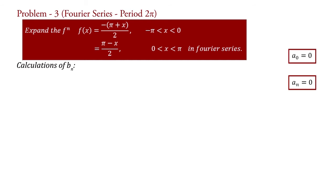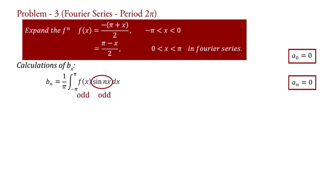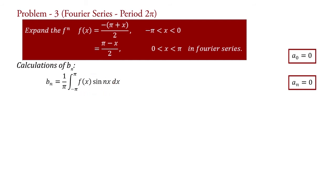The coefficient b_n equal to (1/pi) times the integral from minus pi to pi of f(x) sin(nx) dx. Since f(x) is odd and sin(nx) is also odd, the product of odd times odd equals an even function. Therefore, using the property of even functions, we can write b_n equal to (2/pi) times the integral from 0 to pi of f(x) sin(nx) dx.